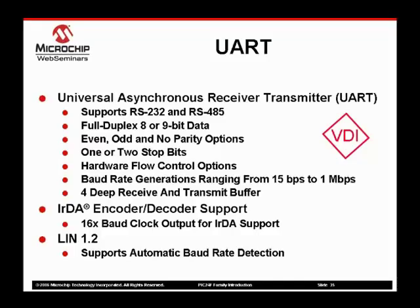For full duplex, 8 or 9 bit data is supported. Even, odd, and no parity options are supported. One or two stop bits can be used. The module also supports hardware flow control options for operations where one or both of the devices are potentially busy. A modem is one example of the type of operation that can benefit from hardware flow control. Baud rates can be generated from 15 BPS to 1 mega BPS.